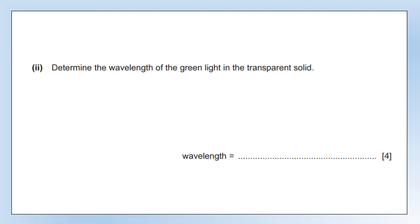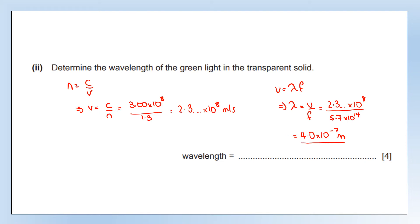Determine the wavelength of the green light in the transparent solid. First, calculate the speed in the solid: the wave slows down by a factor of 1.3 due to refraction, giving the speed of green light in the solid. Then use the wave equation to find the wavelength. Many people incorrectly used 3 × 10⁸ m/s in the wave equation — that's not the speed in the solid. There are marks for the working at each stage and for the final answer with units.